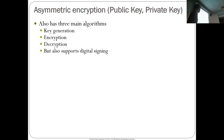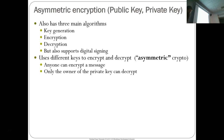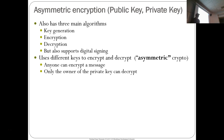The solution to the key distribution problem is public key cryptography — public key and private key algorithms. It also has three main algorithms: key generation, encryption, and decryption. But it also supports something very critical on a blockchain: digital signatures. The idea of public key cryptography is that you use different keys to encrypt and decrypt messages — this is also called asymmetric cryptography. Anyone can encrypt a message, and only the owner of the private key can decrypt it.